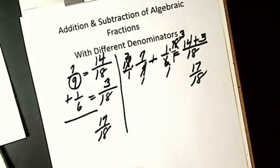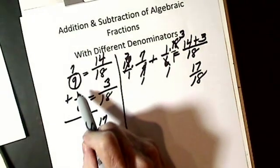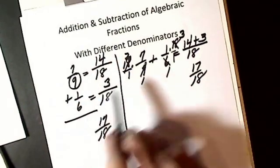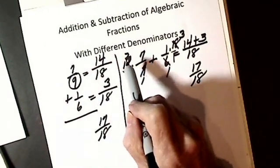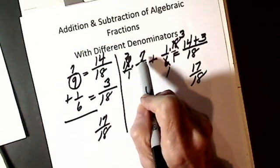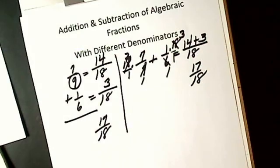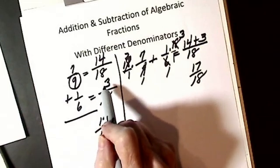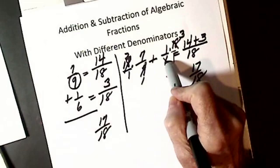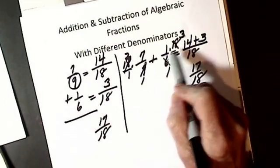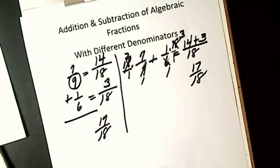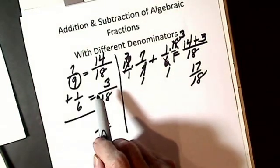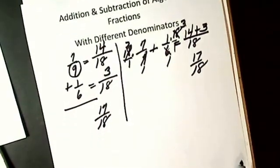Mathematically, I'm doing the same thing: 9 into 18 is 2, 2 times 7 is 14; 6 into 18 is 3, 1 times 3 is 3. Like I said, I learned fractions this way and I would do it this way, but this is how we're going to do algebra.